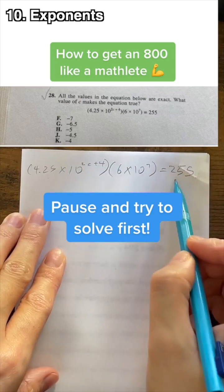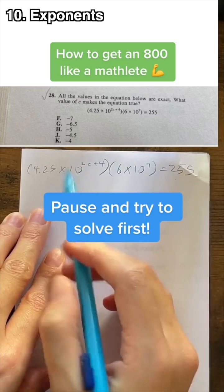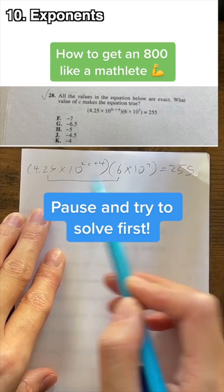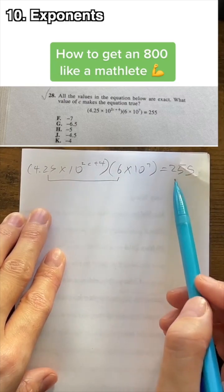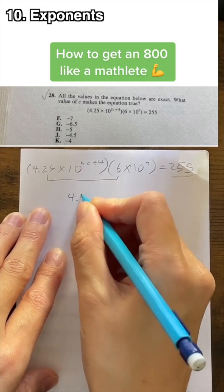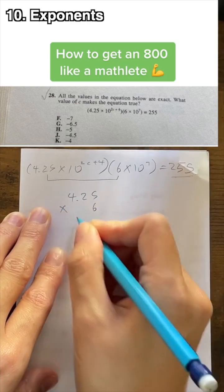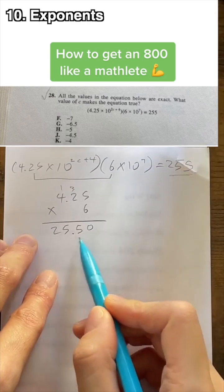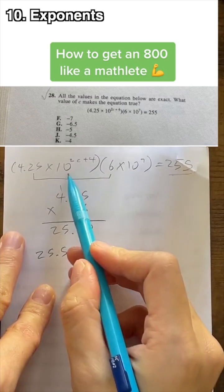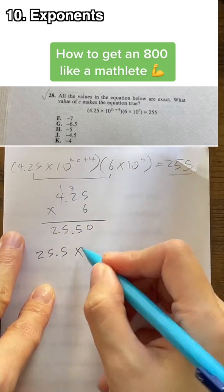Remember that the numbers that they use in the problems are supposed to be simple. So just by guessing, we can see and predict that these two numbers multiplied will be some form of 255. So by combining the like terms, we have 25.5.